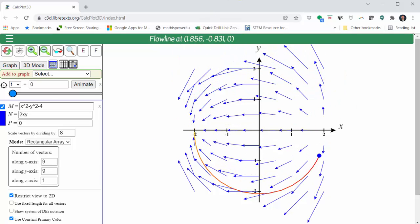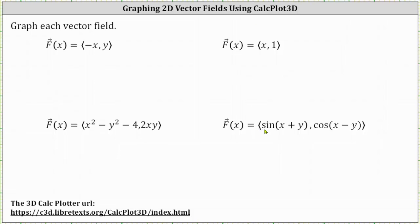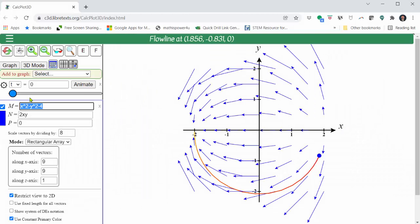And for the last vector field, the x component is sine of the quantity x plus y and the y component is cosine of the quantity x minus y. And therefore, we enter m equals sine of the quantity x plus y. Enter.